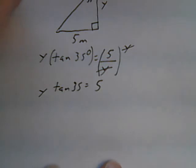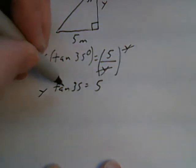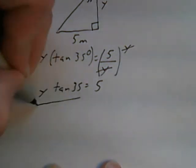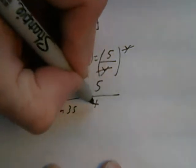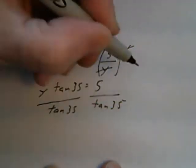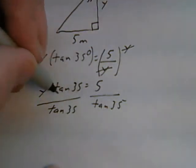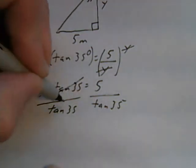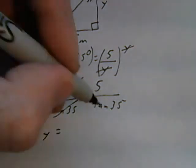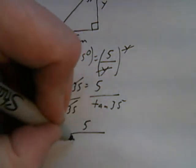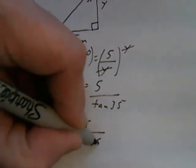I need to get Y alone. To get Y alone, I'm going to divide both sides by tan 35. So, tan 35 divided by tan 35, they go away, and I'm left with Y equals 5 over tan 35.